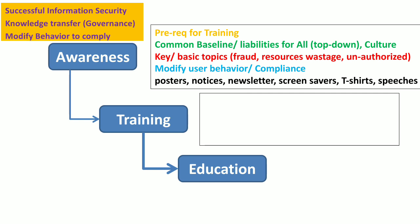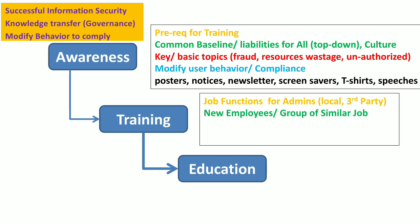Next comes training. This training is more detailed than awareness. After conducting awareness, we need to conduct training for specific users or admins. This training is for the job functions — for example, the security training of the admin. This security training can be conducted locally by the organization or arranged through a third party if an advanced form of training is required. Security training should be conducted for all employees, including new employees, and employees with similar job functions should be grouped together for specific training.